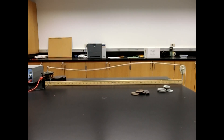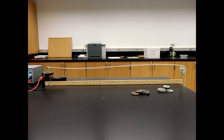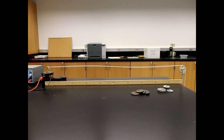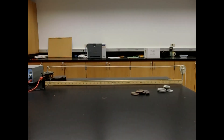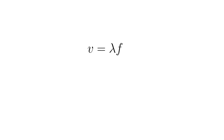This condition is called resonance, and allows us to directly measure the wavelength of a wave at the same time as we observe the frequency we use to create it. The wavelength of a wave multiplied by its frequency gives the speed of propagation, or the wave speed.